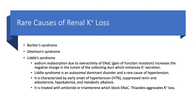Rare causes of renal potassium loss include Bartter syndrome, which has the same effect as a loop diuretic — hypokalemia, alkalosis, no hypertension. It's usually seen in children, has four variants, and diagnosis is by genetic testing. Gitelman syndrome is similar but acts like a thiazide diuretic — hypokalemia, metabolic alkalosis, low urine calcium, no hypertension, and diagnosis is also by genetics.